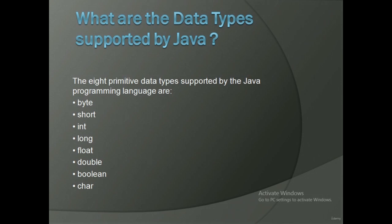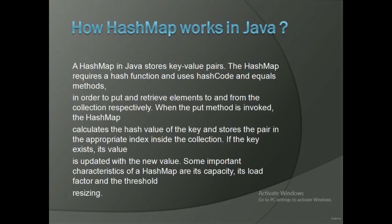What are the data types supported by Java? Java supports eight data types: Byte, Int, Long, Float, Double, Boolean, and Character. How does HashMap work in Java? A HashMap stores key-value pairs. It requires a hash function and uses hashCode and equals methods to put and retrieve elements from the collection. When the put method is invoked, the HashMap calculates the hash value of the key and stores it at the appropriate index. If the key exists, its value is updated. Important characteristics of HashMap are its capacity, load factor, and threshold resizing.